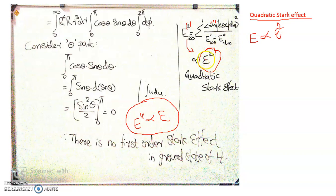This kind of Stark effect, where the correction in energy is proportional to the square of the applied electric field, is referred to as the quadratic Stark effect. The quadratic Stark effect is associated with the second-order correction in energy.